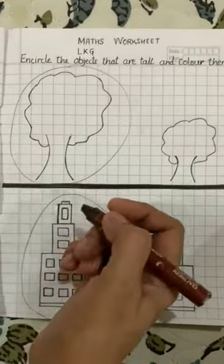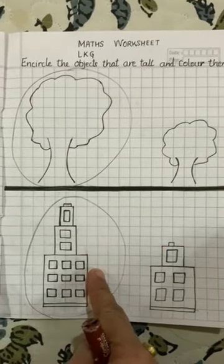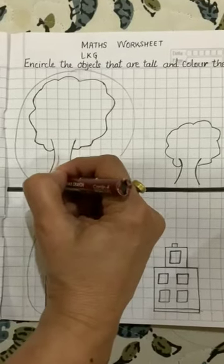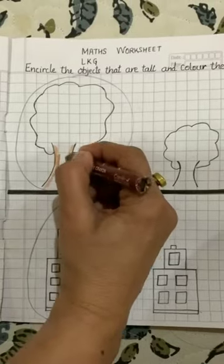Now we will color in the tall tree and tall building. So let's start. Very nicely, slowly, slowly. First, we will do the outline.